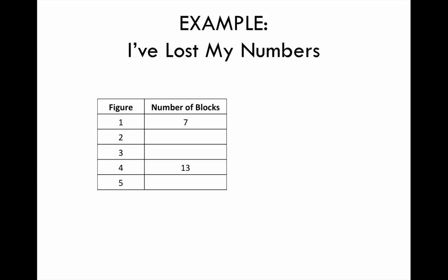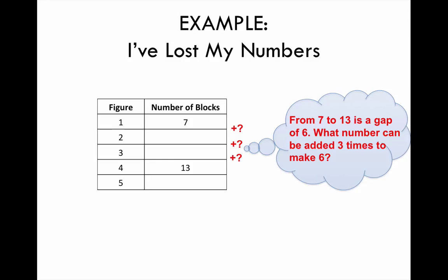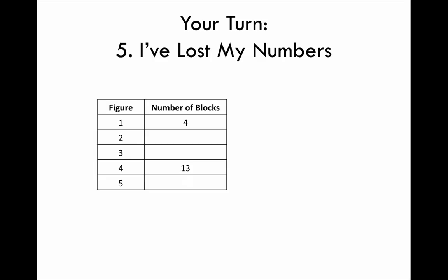Here's a challenge — this is tricky. The following t-table gives the number of blocks used in building a structure, and the same number of blocks were added each time. Let's look at how to find the missing numbers. We have three gaps between 7 and 13. From 7 to 13 is a total gap of 6. What number can be added three times to make up this gap of 6? Two can be added three times: 2, 4, 6. Then we can fill in the missing numbers and the table is complete. Here's one for you to try in your notebook — copy the numbers on the existing table and see if you can find the missing numbers. Pause the video and do this now, then press play to check your answer.